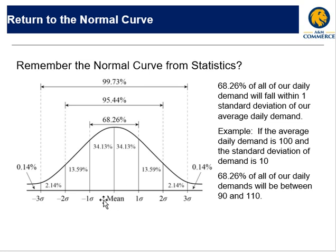Again, if we look at the mean and start going out one standard deviation either way, within one standard deviation of the mean is 68.26% of all our demands.